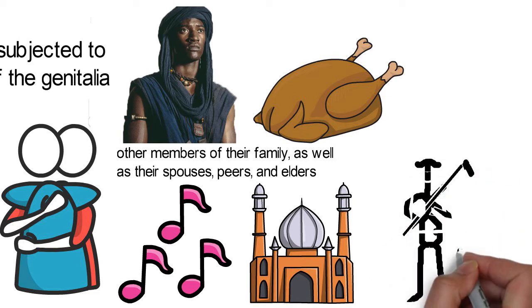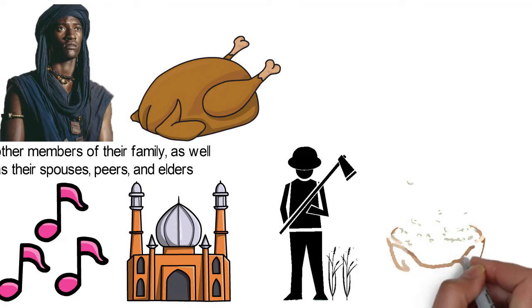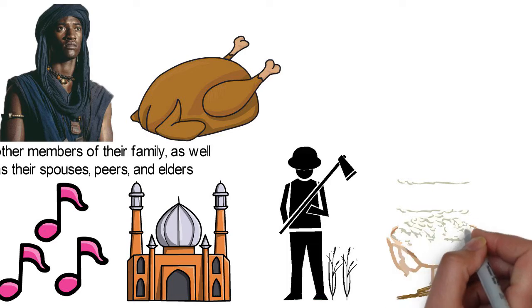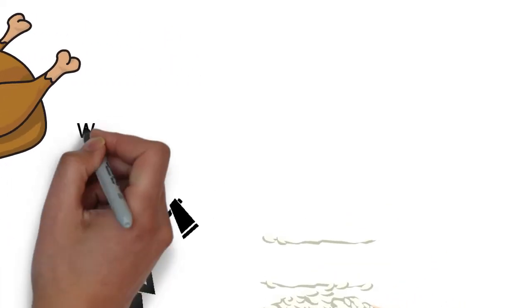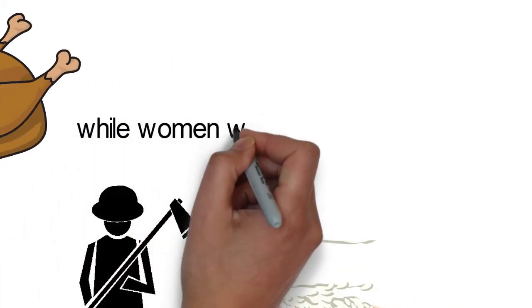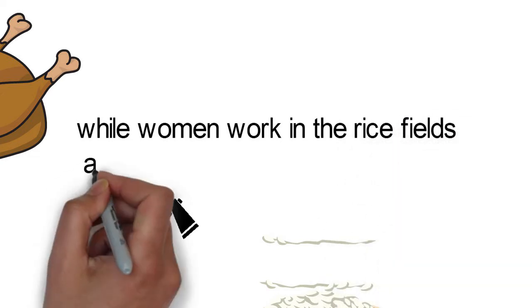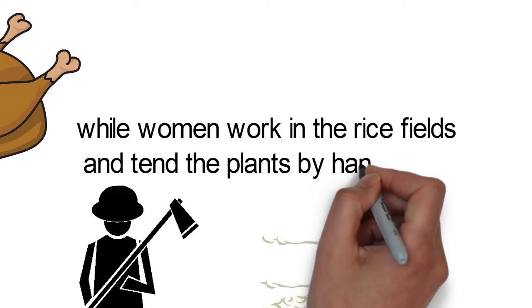The major occupation of the Mandinka is rural subsistence farming. They produce ground nuts, millet, and rice. During the raining season, men plant peanuts as their main cash crop. Peanuts are also a staple of the Mandinka diet. Some other men also plant millet and corn, mostly for family consumption, while women work in the rice fields and tend the plants by hand.